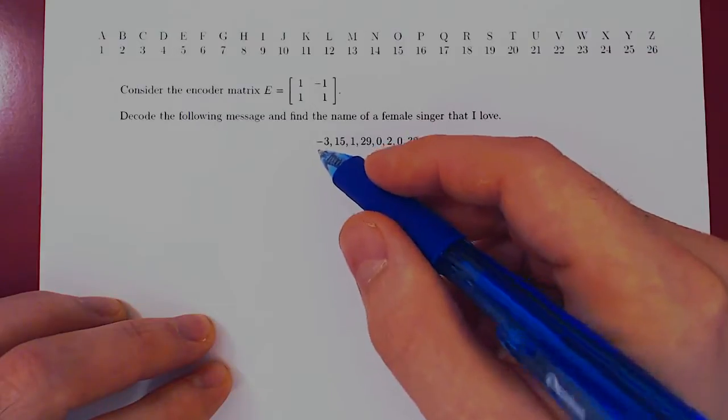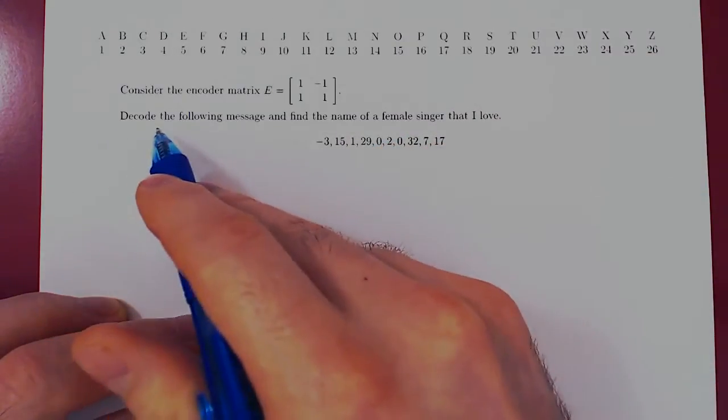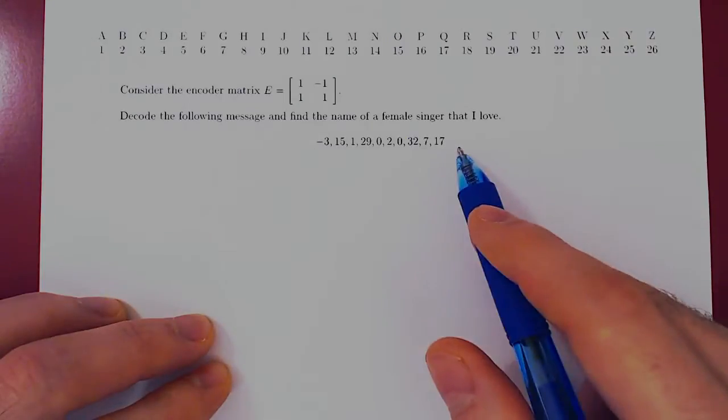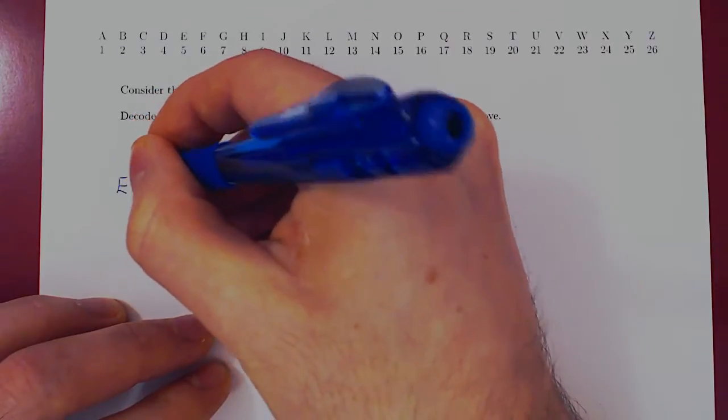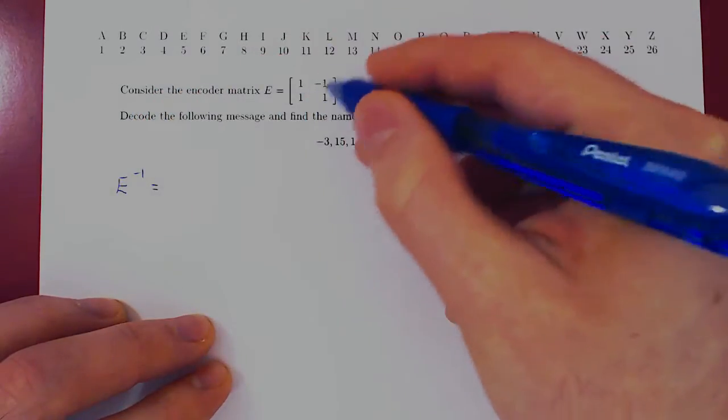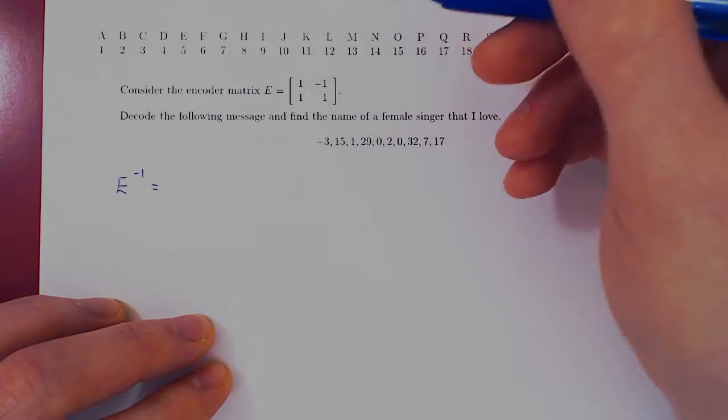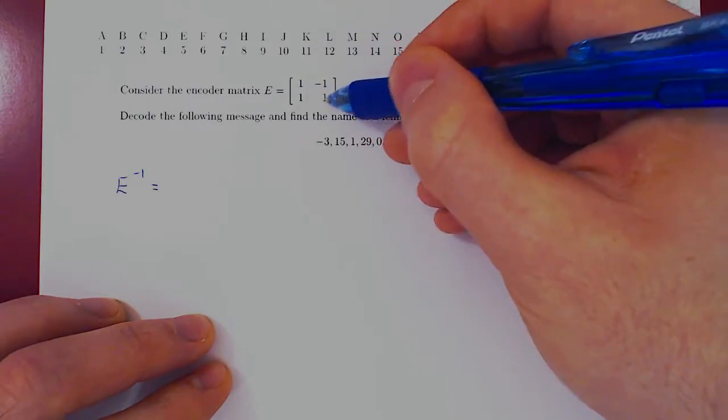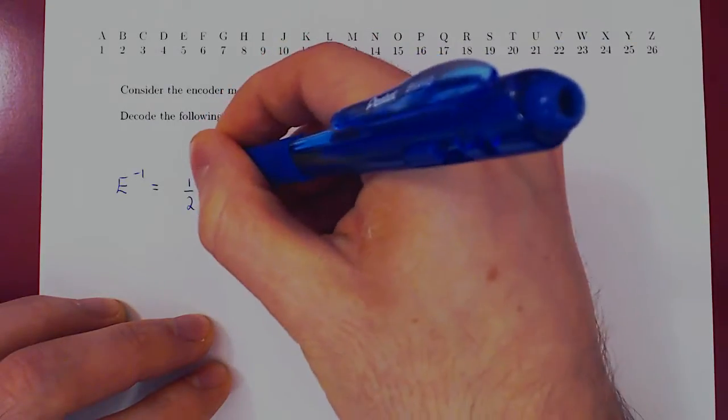To decode, and we are told that this message is encoded because we have to decode it, well, to decode the message we need the inverse of the encoder matrix. So let's find the inverse. As it's a 2 by 2 matrix, the inverse is really easy to find. So 1 over AD minus BC, 1 minus negative 1 is 2, so it's 1 half.